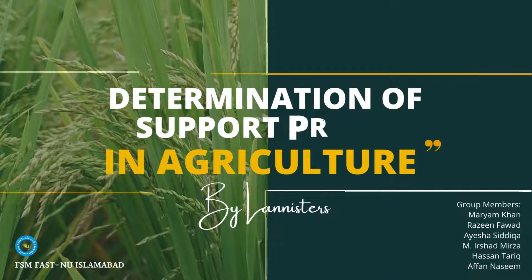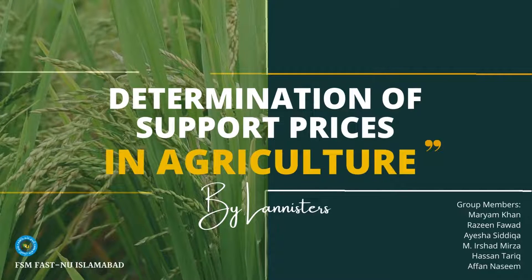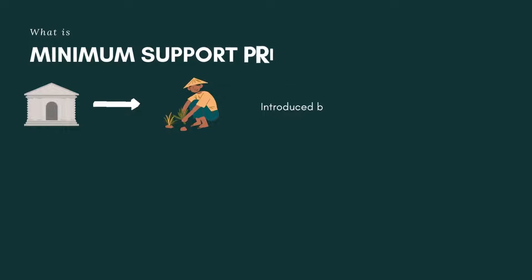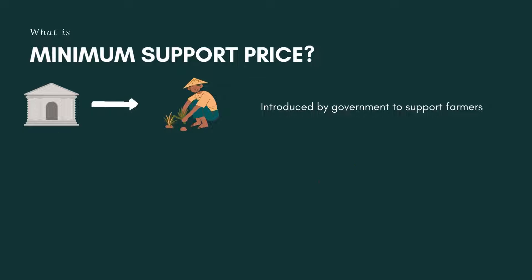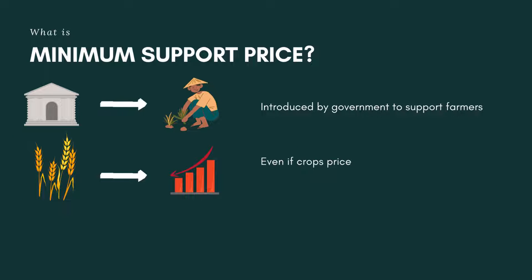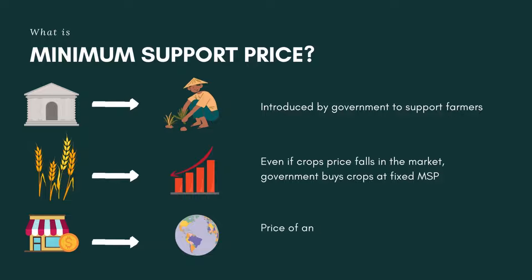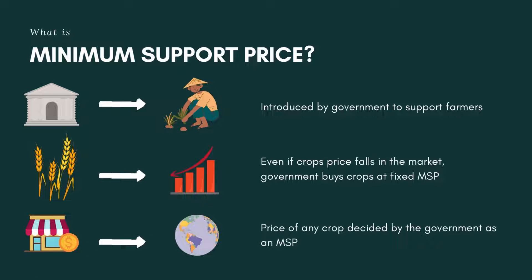In this video we will talk about the determination of support prices in agriculture. Minimum Support Price is a system introduced to protect farmers — even if the price of crops falls in the market, the central government will buy crops at a fixed minimum support price from farmers so that farmers do not go into losses.